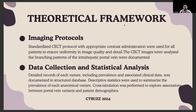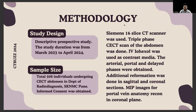This was the framework. A standardized CCT protocol with appropriate contrast administration was used for all patients to ensure uniformity in image quality and detail. The CCT images were analyzed and the branching patterns of the intrahepatic portal vein were documented. Detailed records of each variation including prevalence and associated clinical data were documented in a structured database. Descriptive statistics were used to summarize prevalence of each anatomical variant, and cross-tabulation explored associations between portal vein variants and demography. The study design was a descriptive prospective study conducted from March 2023 to April 2024, using a Siemens 16-slice CT scanner. Triple-phase CCT of the abdomen was performed with IV contrast iohexol. The arterial, portal, and delayed three phases were obtained, with additional reformation in sagittal and coronal sections. MIP images were used where indicated.